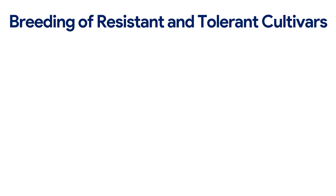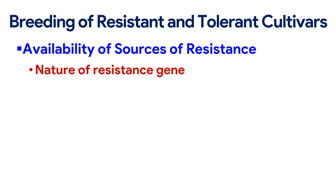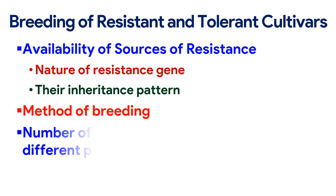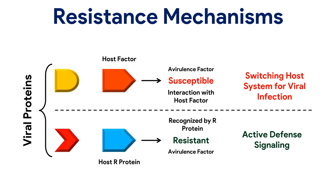Breeding of resistant and tolerant cultivars requires consideration of the availability of sources of resistance, nature of resistance gene, their inheritance patterns, method of breeding, and number of resistant varieties developed in different plant species. Resistance mechanisms: the gene-for-gene hypothesis states that for each gene controlling resistance in the host, there is a corresponding specific gene controlling avirulence in the pathogen. Depending on the gene combinations in a mildly race, different genes will be genetically identified as the avirulence or AVR gene.